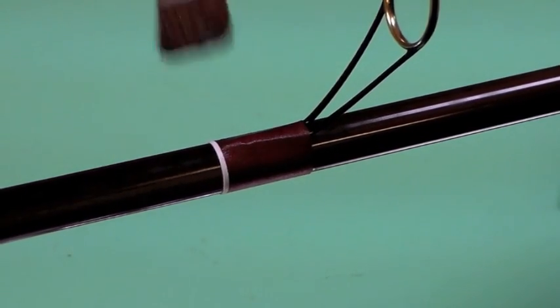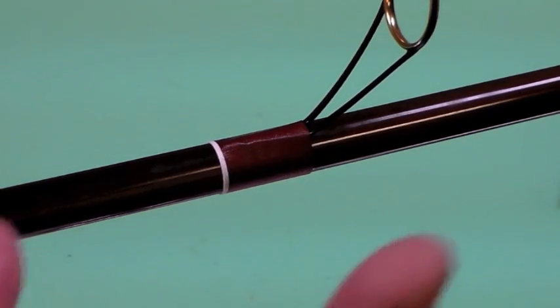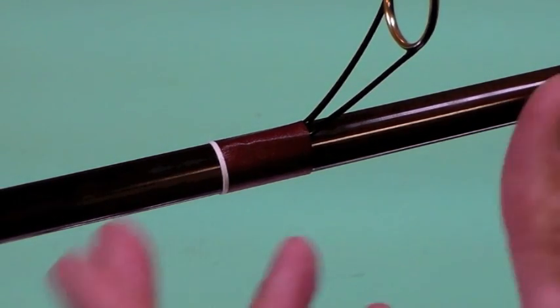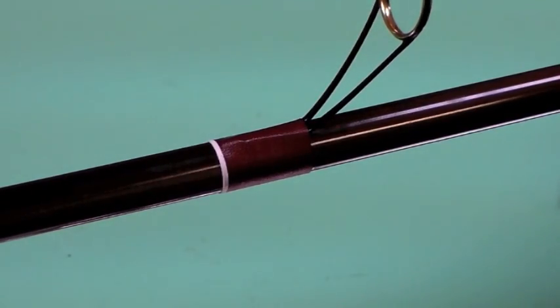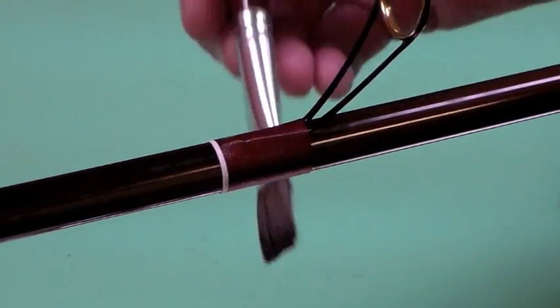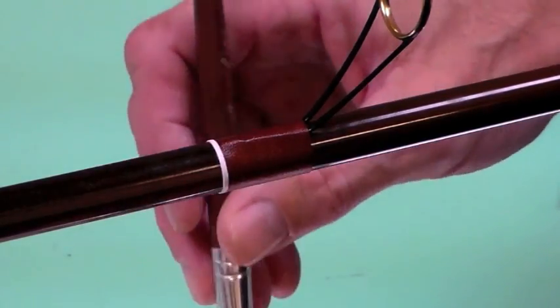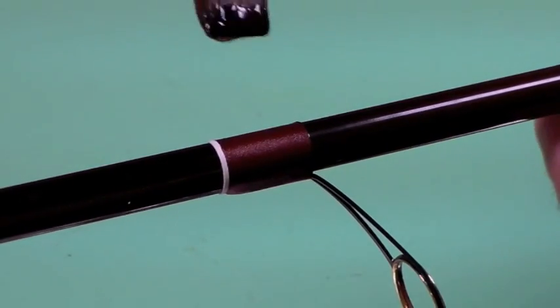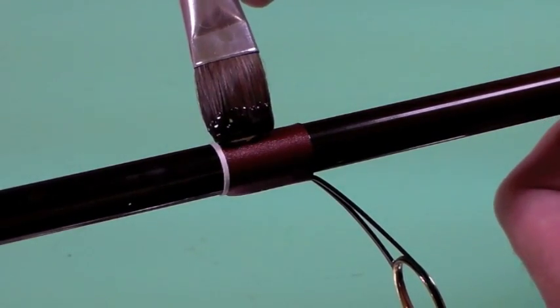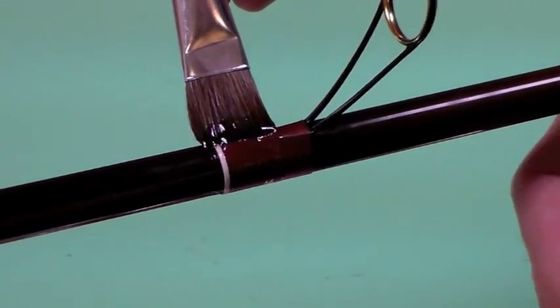Using a wider brush because this is a wider wrap. There's nothing wrong on a rod with using two brushes: a wider brush down near the butt on your cross wraps, on your larger guides with longer wraps, and then a narrower brush as you get towards the tip where the guide wraps are more narrow. I'm going to load my brush and I'm going to come up to the guide wrap and I'm going to touch the brush to the guide wrap just a little bit beyond the edge.